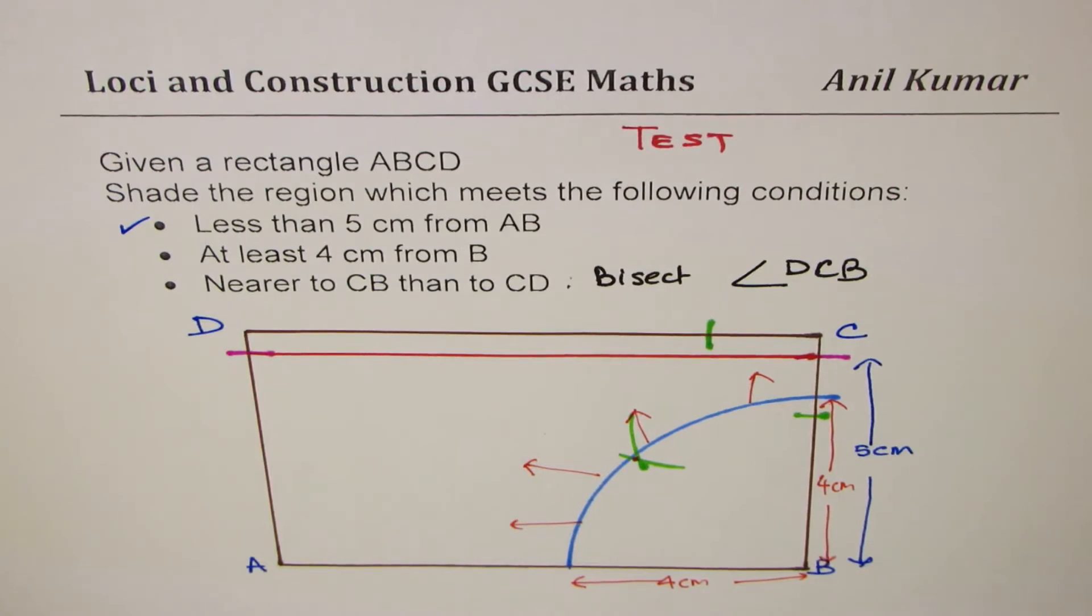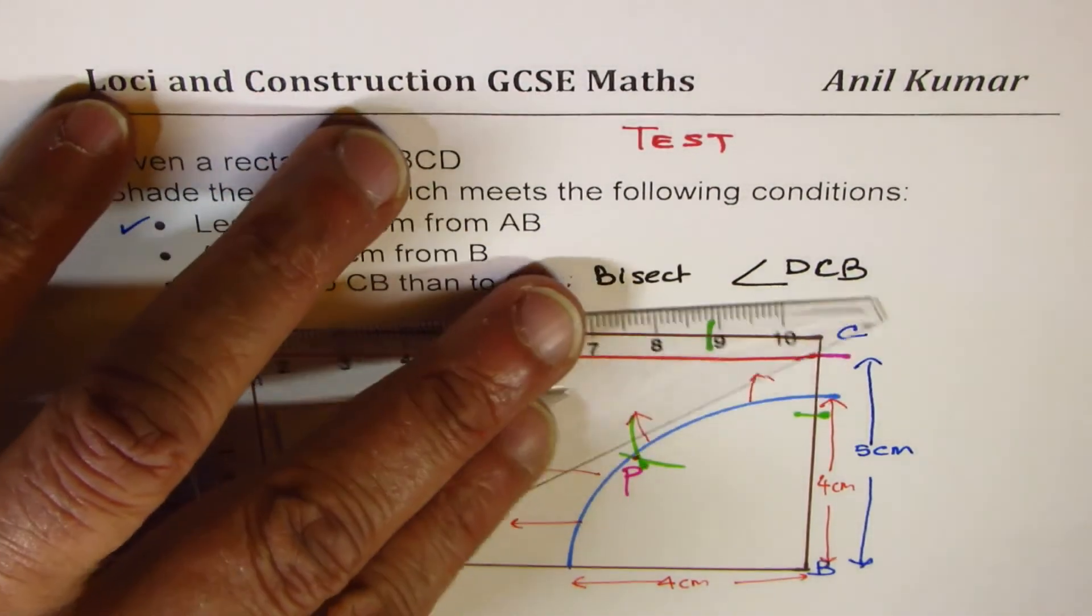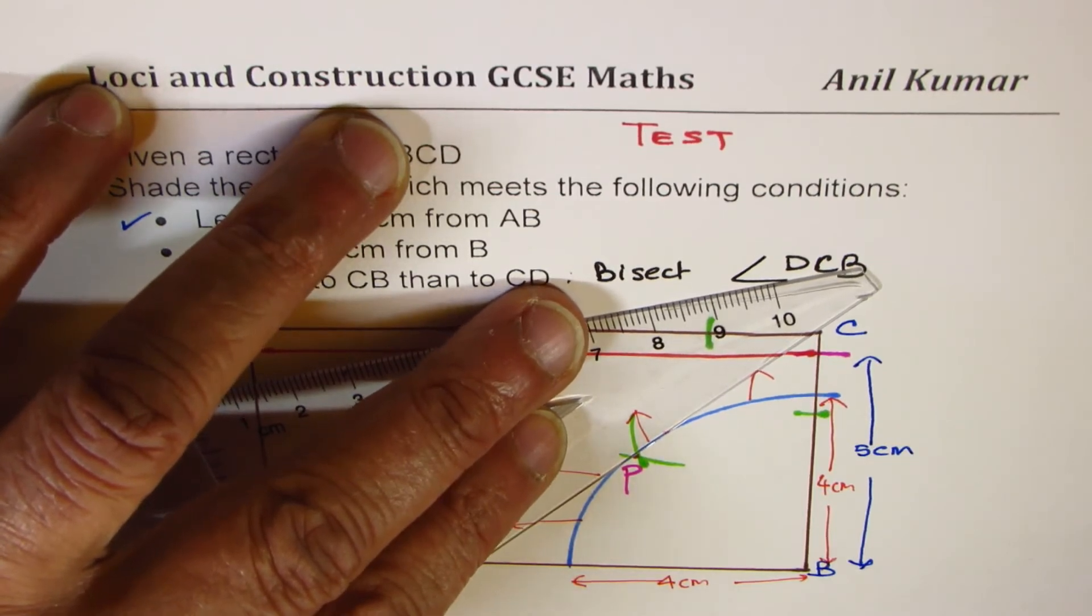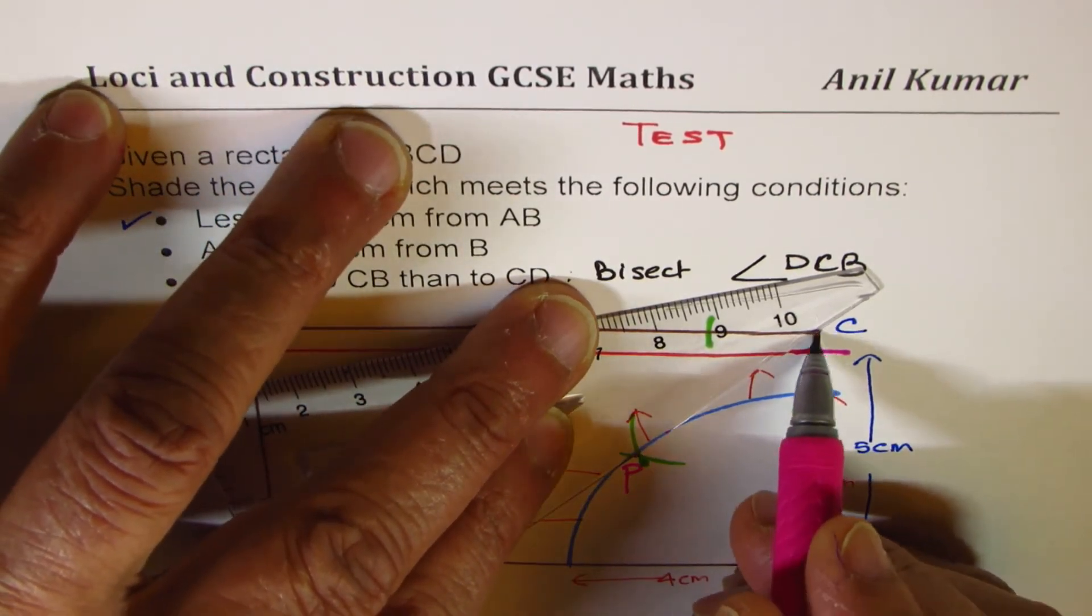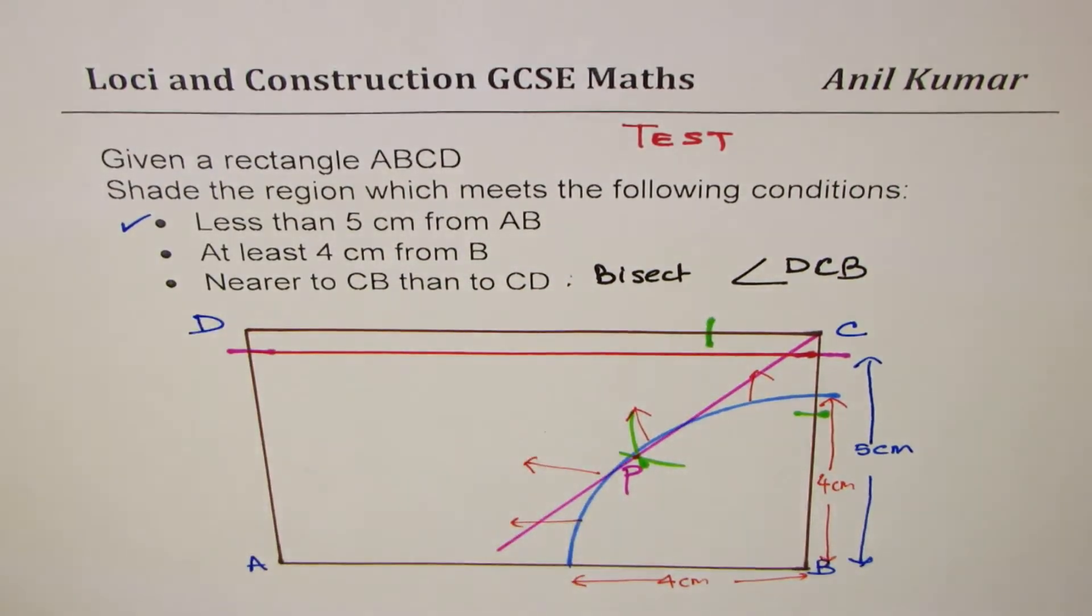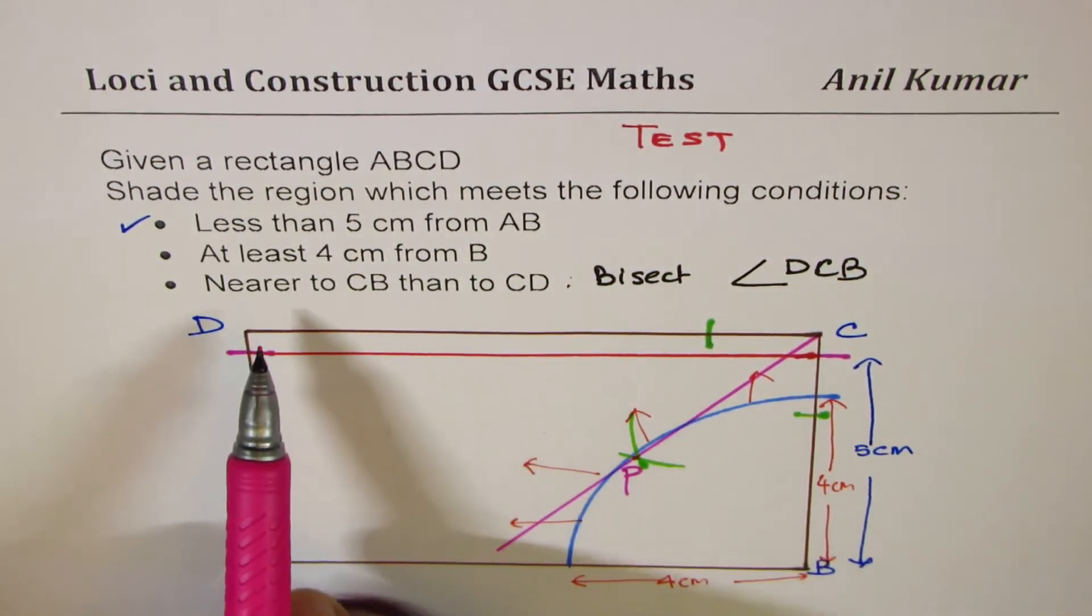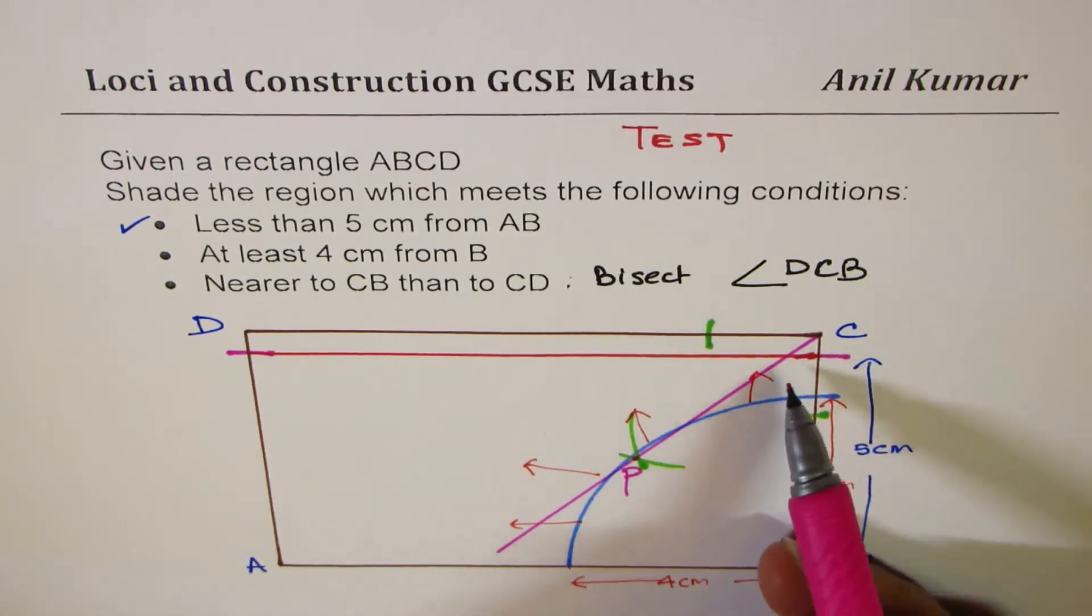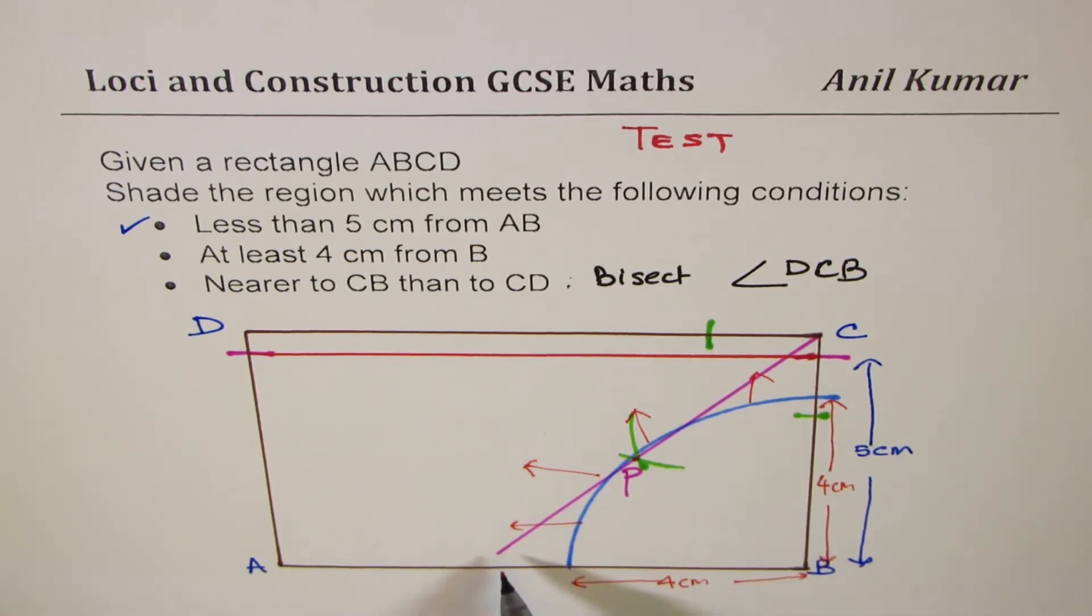Use that point, join it with C, to get your line. So let's use some other ink. So join with C, the point which you get. Let me mark that point as P. So if I use that point and C, I get the bisector of the angle DCB. So that is what it is. Now, last part is nearer to CB than CD. That means on this side, nearer to CB than CD. So let me extend this.